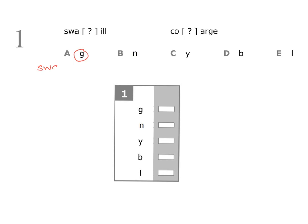S-W-A-G: this is a word — 'swag', it can mean money or goods taken by a thief. If we take 'ill' and add the letter G at the front we have the word 'gill' — gills are the respiratory organs of a fish. On the right hand side, taking 'co' and adding G gives 'cog' — I feel like a small cog in a big wheel. Taking 'arge' and adding G at the front is not a word, so we move on.